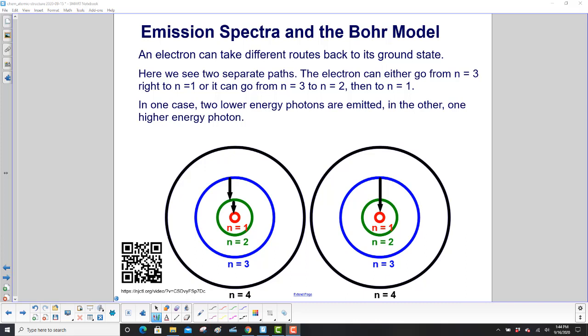An electron can take different routes back to its ground state. Here we show different paths. One path here, one path here. And we have an electron in the n equal 3 level, the blue level here. It can either go from 3 right down to 1, right here. Or it can go from n equal 3 to n equal 2, and then n equal 2 to n equal 1. In one case, two lower energy photons are emitted. And in the other, one higher energy photon.